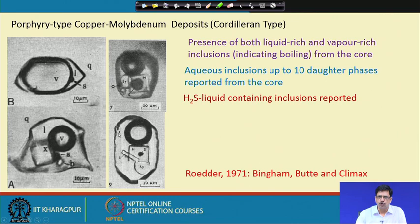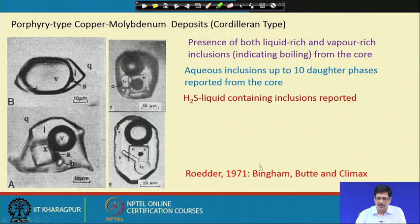From old literature — Roedder 1971 — there was a comparison of the Bingham, Butte, and Climax porphyry deposits. Bingham and Butte are porphyry copper deposits and Climax is a porphyry molybdenum deposit. The discussion here will be restricted to porphyry copper systems. We can see the inclusions described from this porphyry system, and the typical ones occurring in the western American Cordillera or the Chilean Andes give us a good idea about the porphyry system.